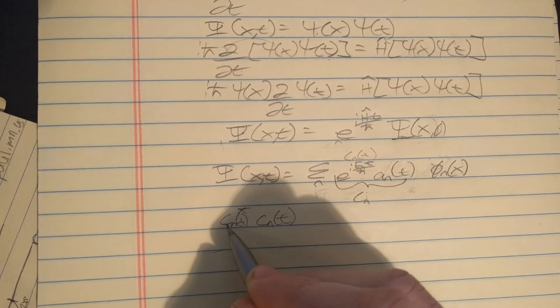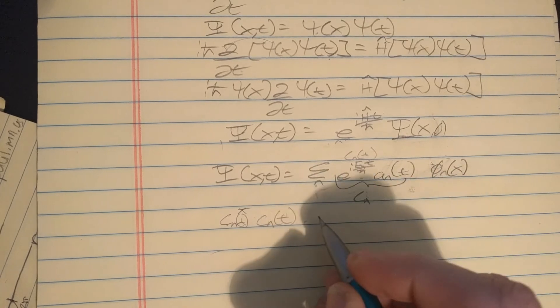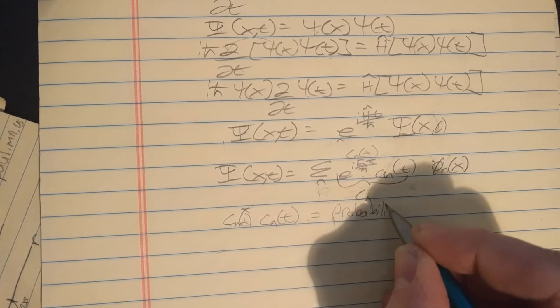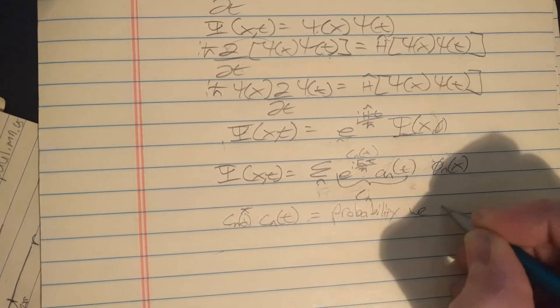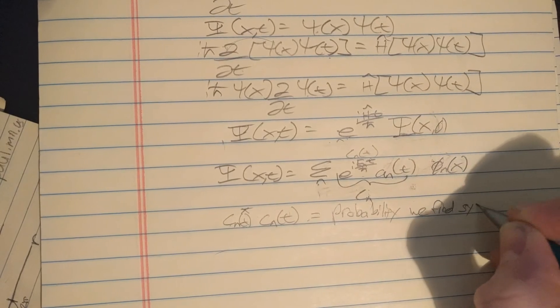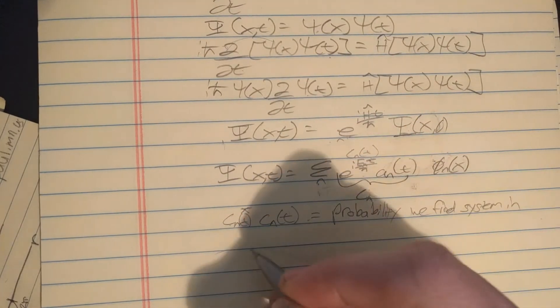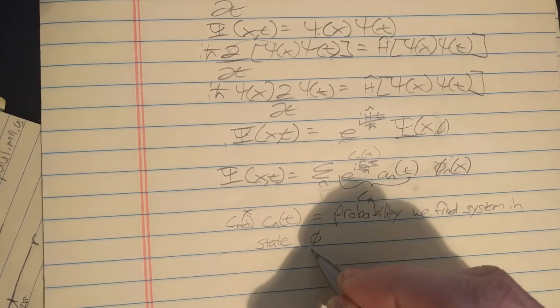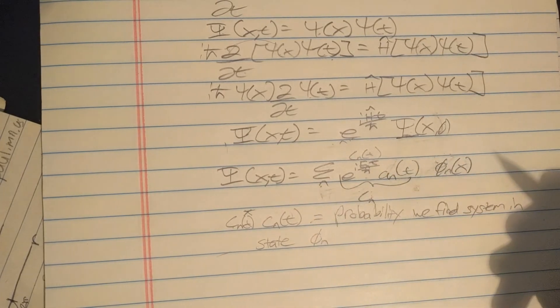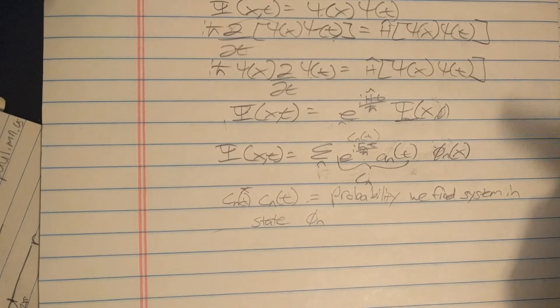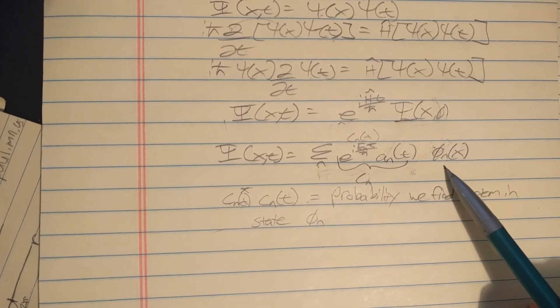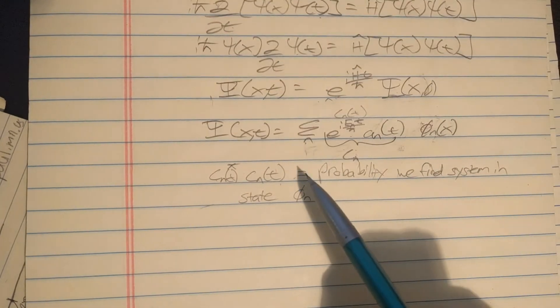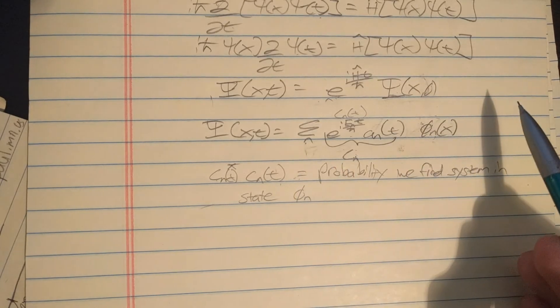This is called the modulus. This gives us the probability we find our system in state psi sub n. If we only had one basis state, well this would be one, and that's good because all the probabilities need to add up to one.